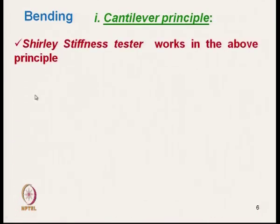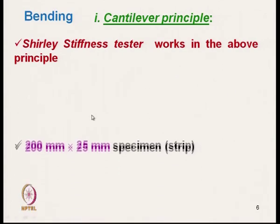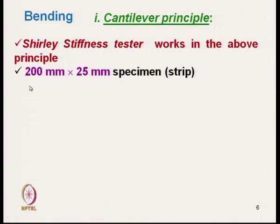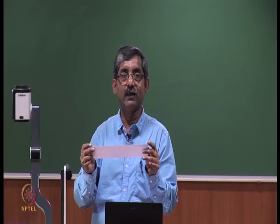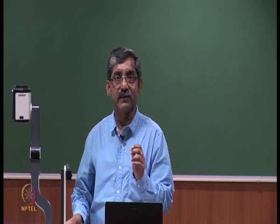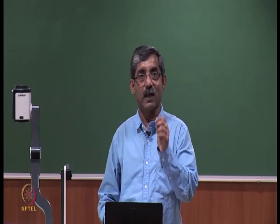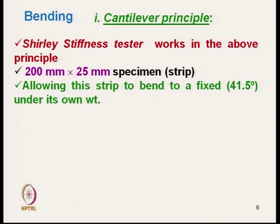In the Shirley stiffness tester, it works on the same principle. The specimen width is 25 millimeters (approximately 1 inch) and length is 200 millimeters (approximately 8 inches). The strip is allowed to bend to a fixed angle of 41.5 degrees under its own weight.